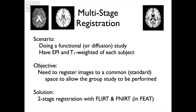Now, what about multi-stage registration? We use it in various scenarios. The most common is when doing a functional or diffusion study: we've acquired EPI data — either functional or diffusion imaging — along with a T1-weighted structural scan of that subject, and we need to get things into standard space. Because we now have three different spaces, we do multi-stage registration both to move between any combination of spaces and because it gives us a better registration overall.